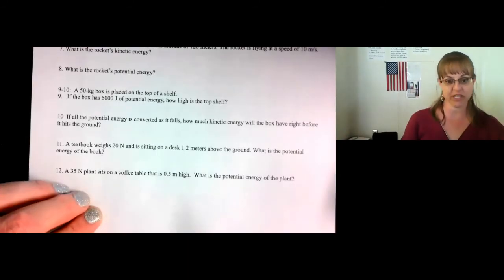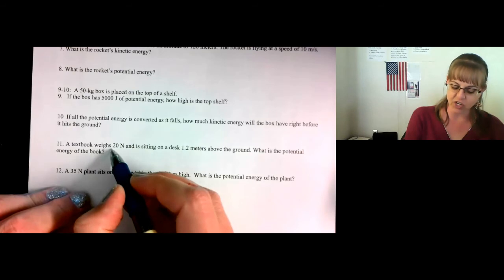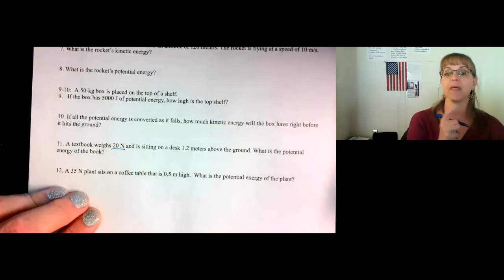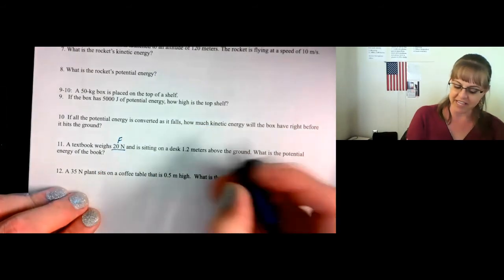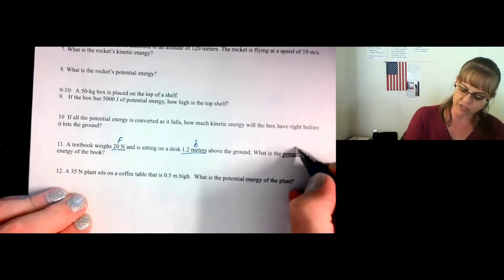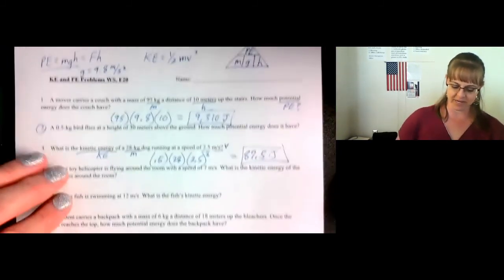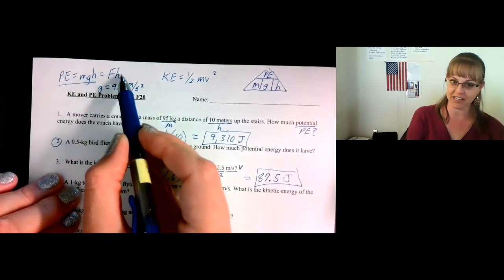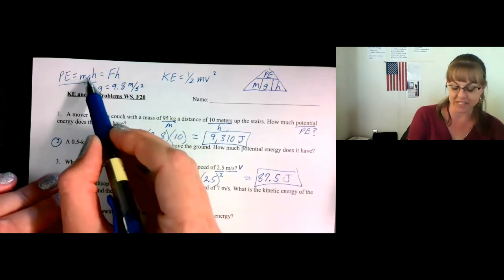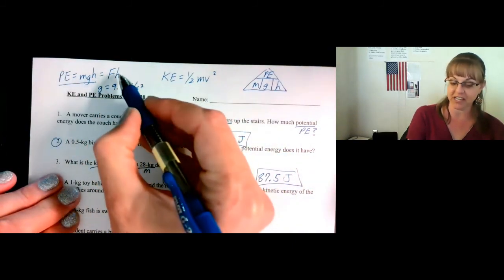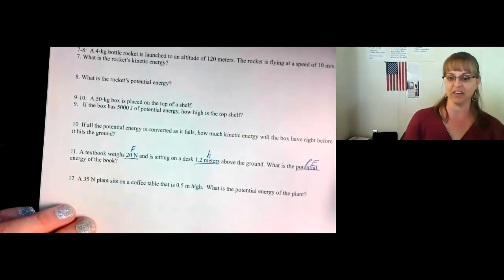Number 11 has a little twist to it. This time we're given newtons, not kilograms. So wait a minute, newtons is a unit of force. The desk is 1.2 meters above the ground. That's a distance or a height. And the potential energy is what we're looking for. Now wait a minute. Oh, potential energy equals force times height. Because it turns out that mass times acceleration due to gravity is the force. So you'll be using potential energy equals force times height to solve number 11 and 12.